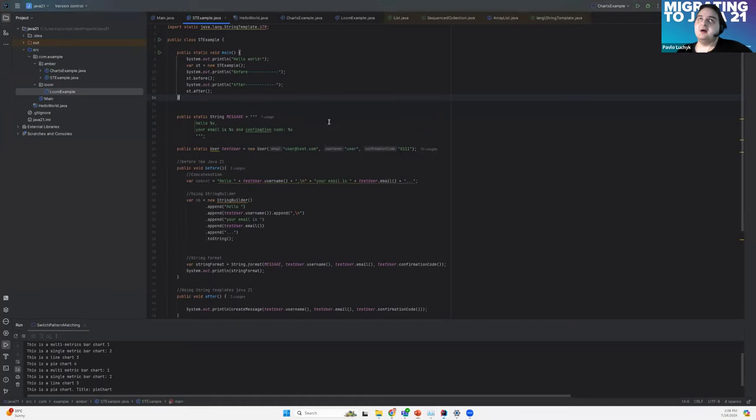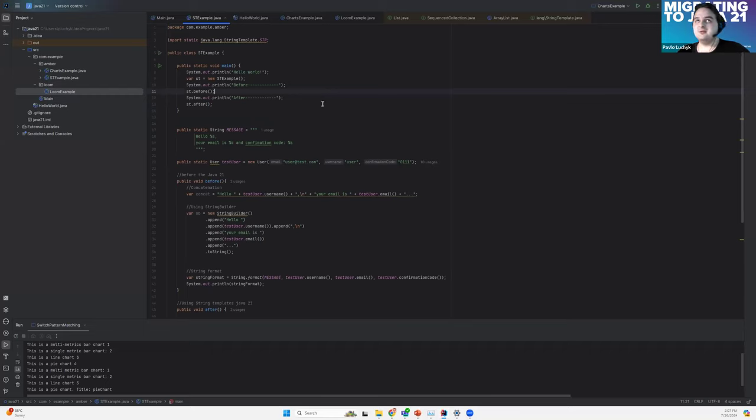String templates are really simplifying our process of creating and formatting strings. Let's just move to the IDE. I created here some simple example. Let's review what we had before Java 21. The main approaches were concatenation, which wasn't so cost effective. It's just more for some constants. Another one is using string builder or string buffer.